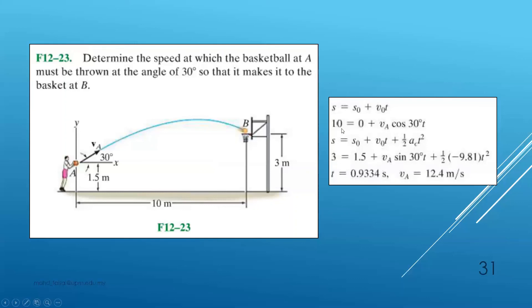Calling the x-component equation number one and the y-component equation number two, each equation has two unknowns: va and t. With two equations and two unknowns, we can solve for both t and va.